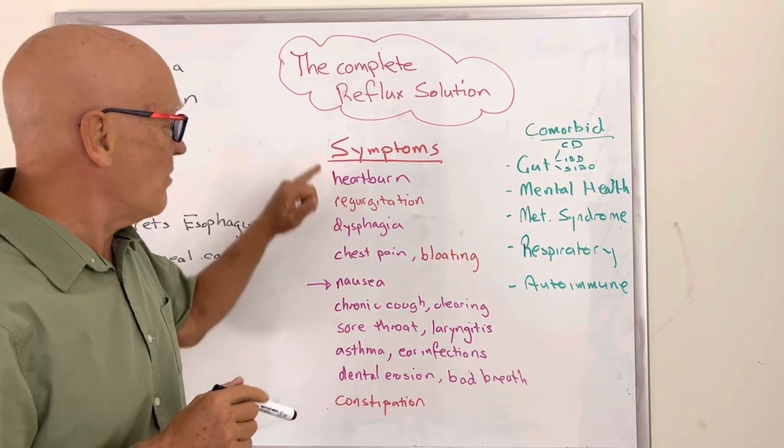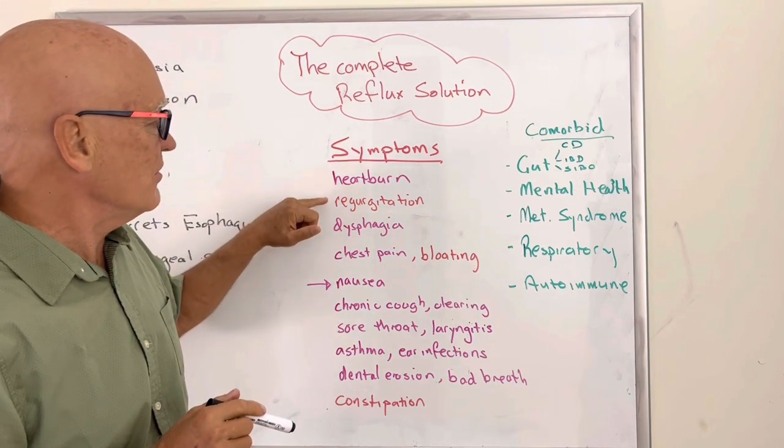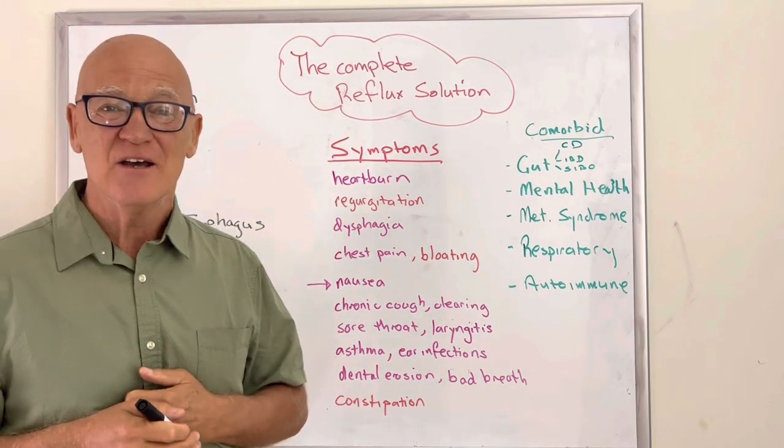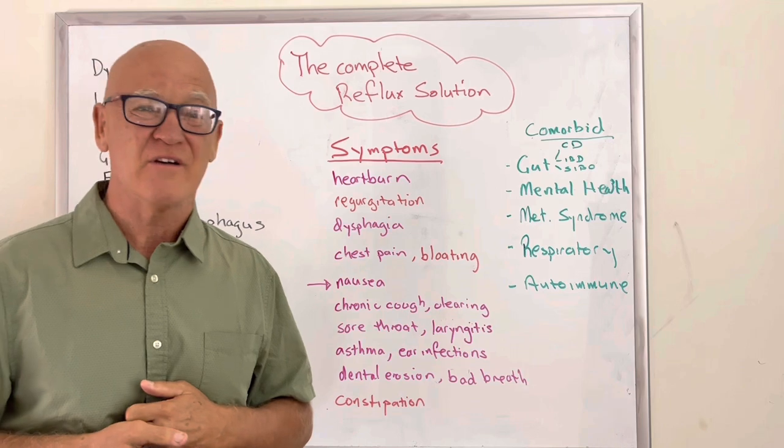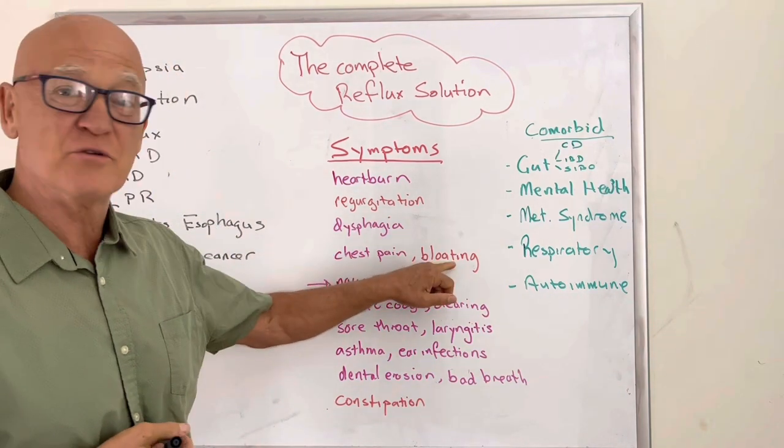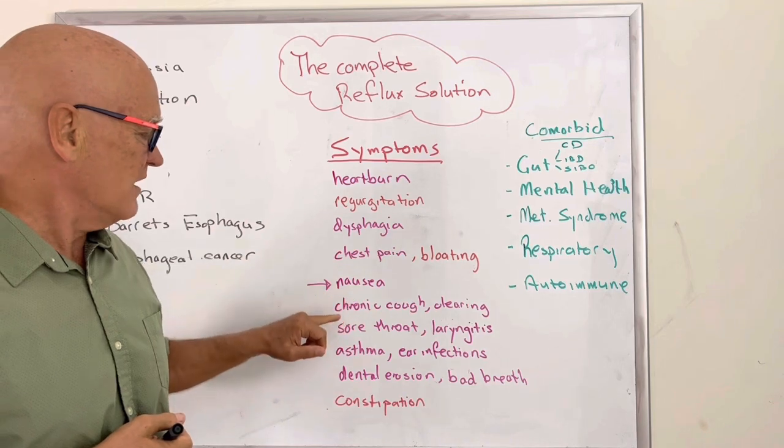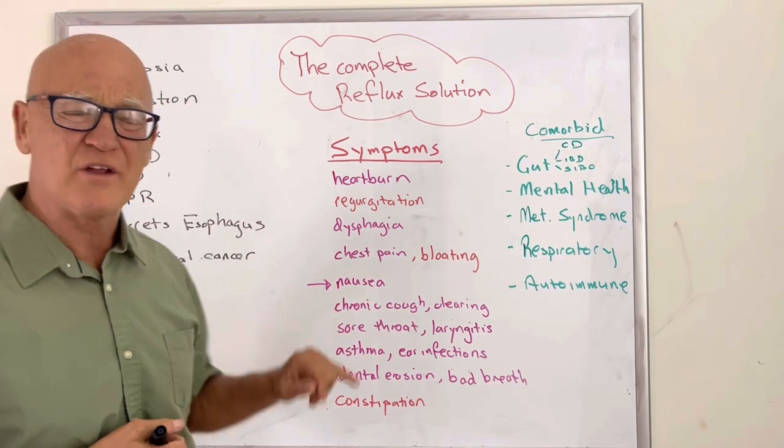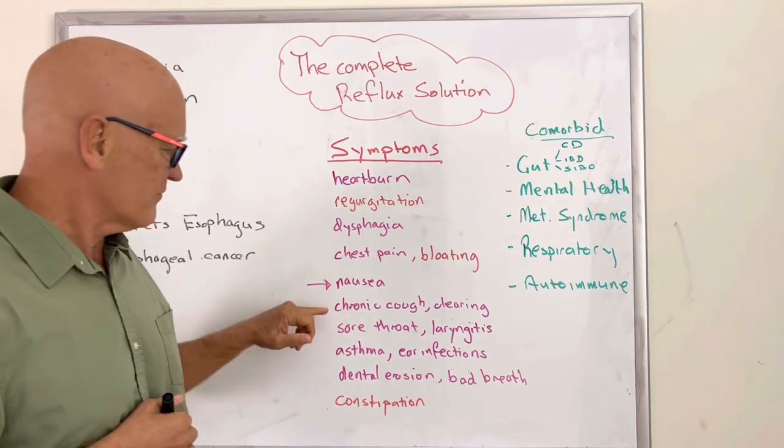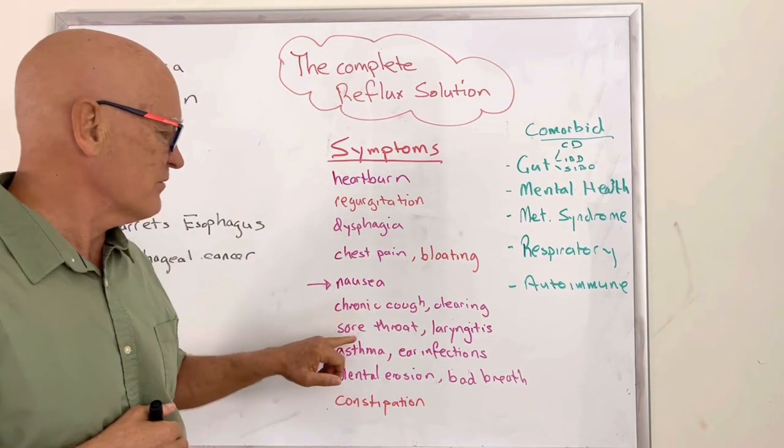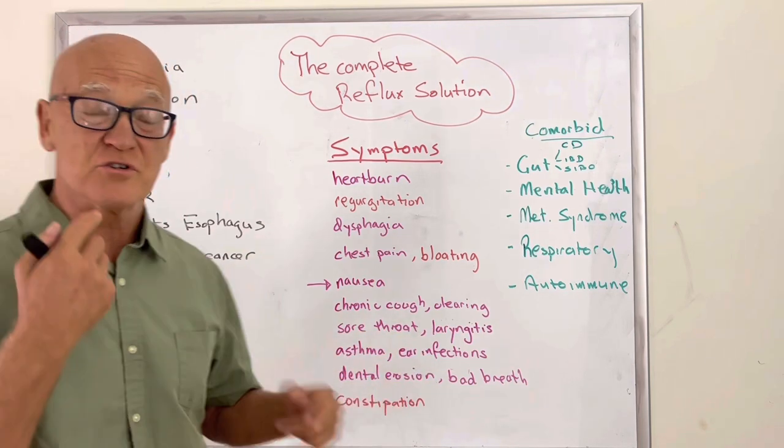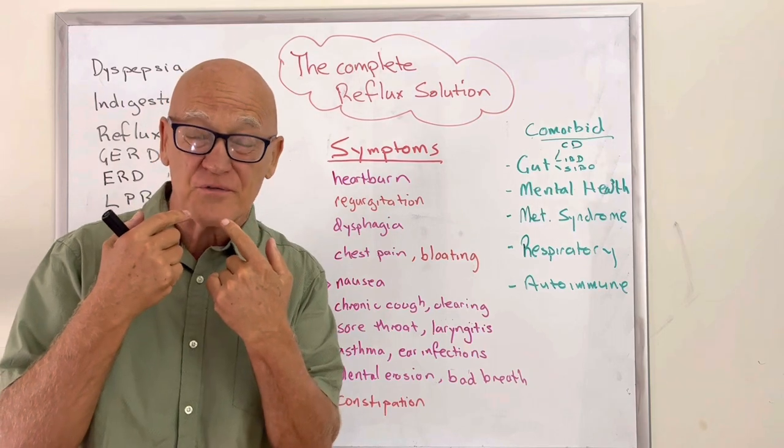Typical symptoms you see in a combination of these are heartburn, regurgitation, dysphagia when the food sits in the stomach or around about the stomach and it just doesn't want to go an hour or two or three afterwards, chest pain and bloating, nausea. And then you've got a whole raft of these other chronic ones.